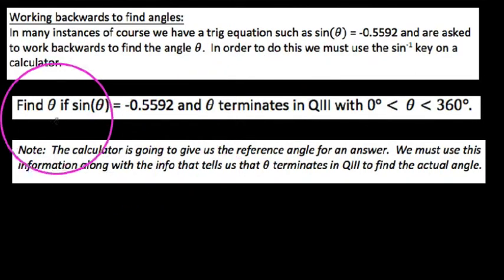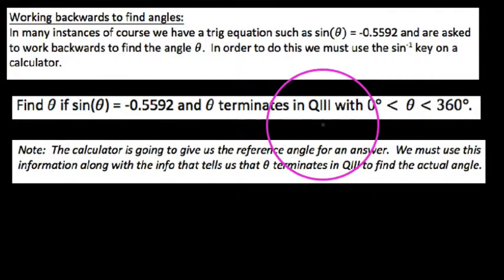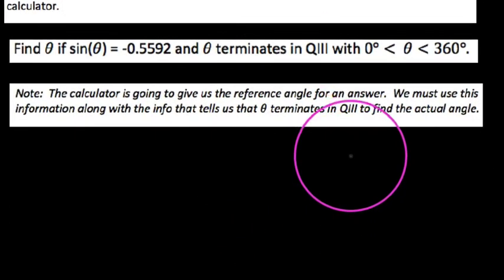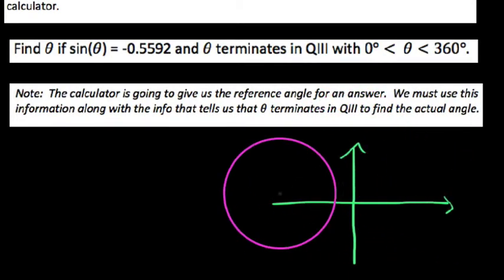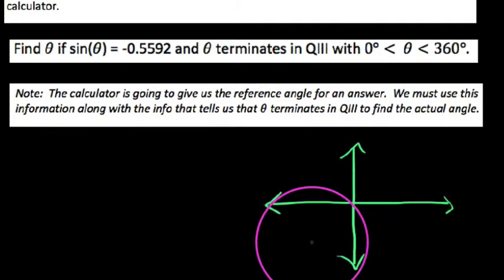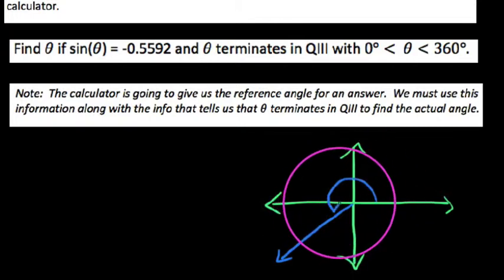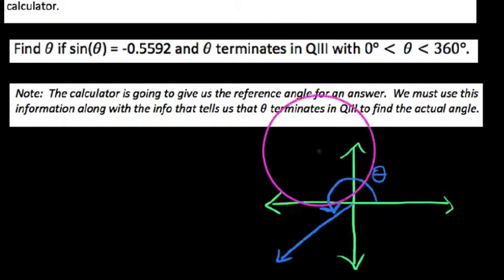So this particular example, we say find theta if sine of theta equals this, but the kicker here is I say that theta terminates in quadrant 3, and by the way, we want an angle between 0 and 360. We don't need all possible angles that do this. We know that all possible angles would be anything coterminal is what we're trying to find here.